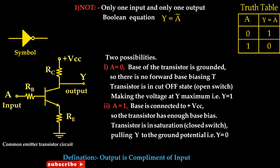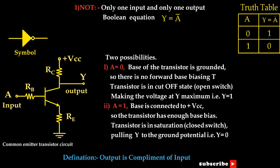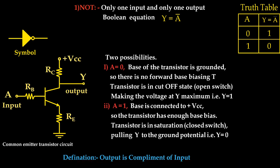So here only two possibilities of inputs are there. If logic 0 is connected at the input of the base, the transistor will be OFF. Since the path from collector to emitter will be OFF, the voltage drop across resistor RC will be HIGH. Hence at the Y output we will get HIGH voltage. So here at the base we have connected logic 0 and we are getting logic HIGH at the output.